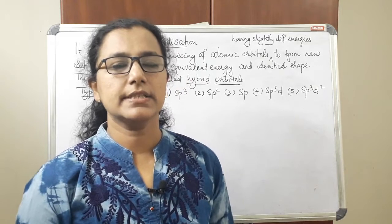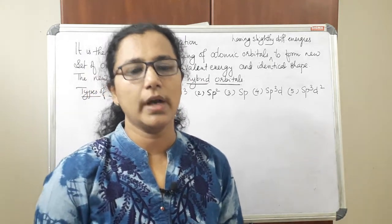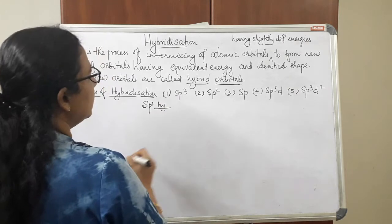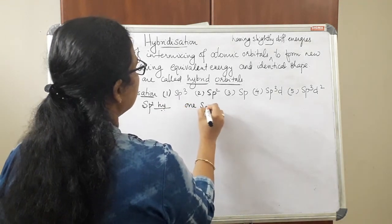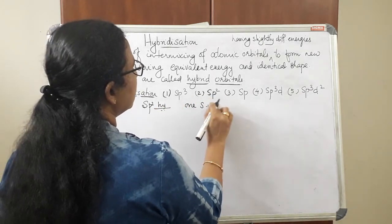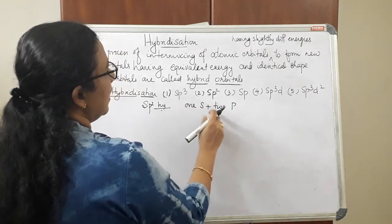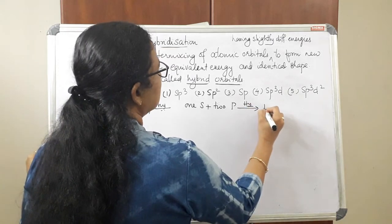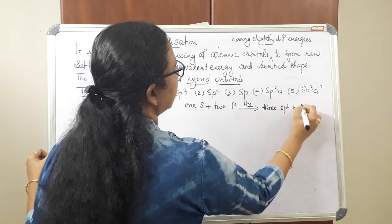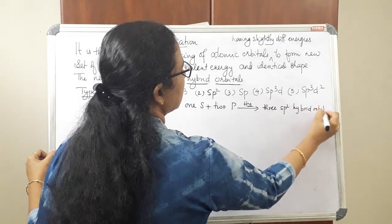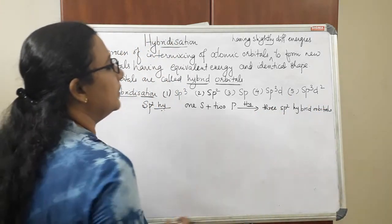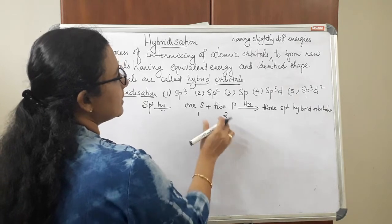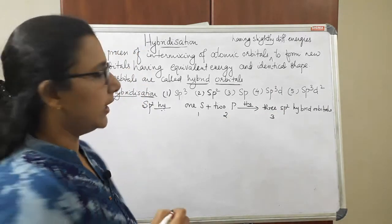Let us see the next type of hybridization, that is sp2 hybridization. In sp2 hybridization, one s orbital and two p orbitals hybridize together, forming three sp2 hybrid orbitals. So the new set of orbitals formed after sp2 hybridization are three in number.